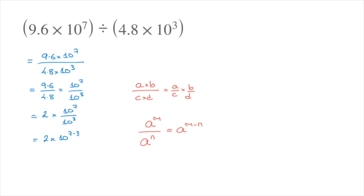Finally, the final answer is 2 times 10 to the power of 4. And we're done — we've just divided one number written in standard form by another. And that's it for this tutorial.